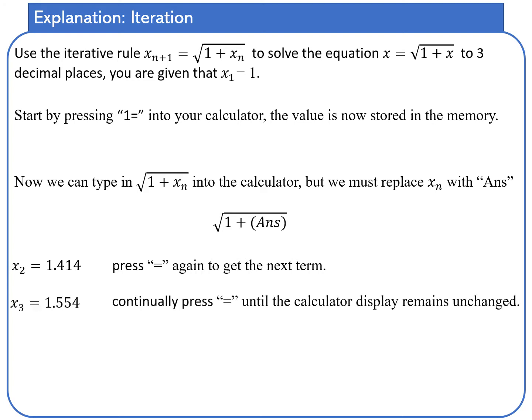Continue pressing equals — the display should update. You should get 1.554, which is x3. Keep pressing equals until the calculator display remains unchanged. Once in that position, we're able to write down our answer to three decimal places, which in this case is 1.618.